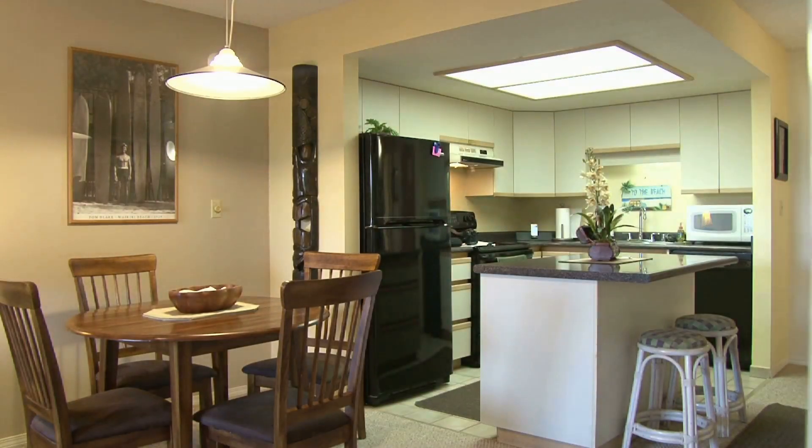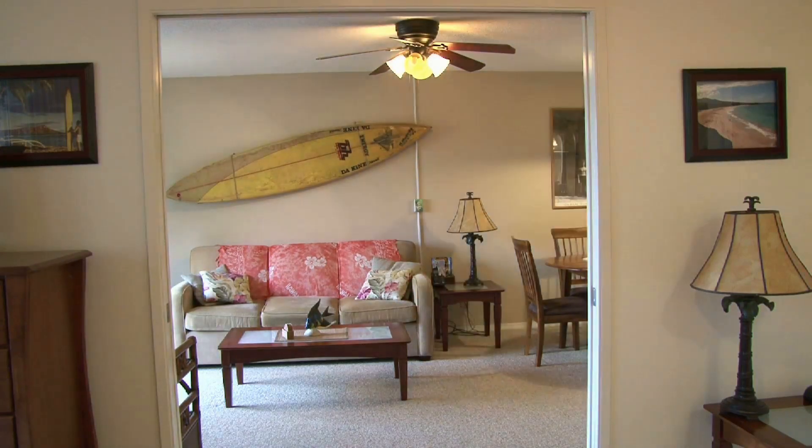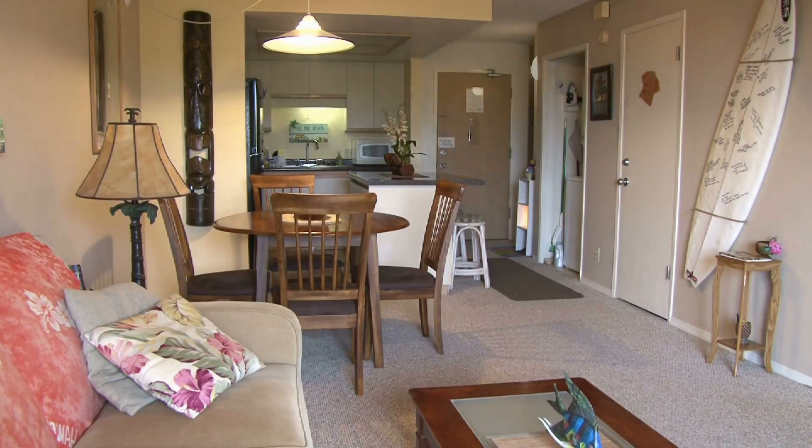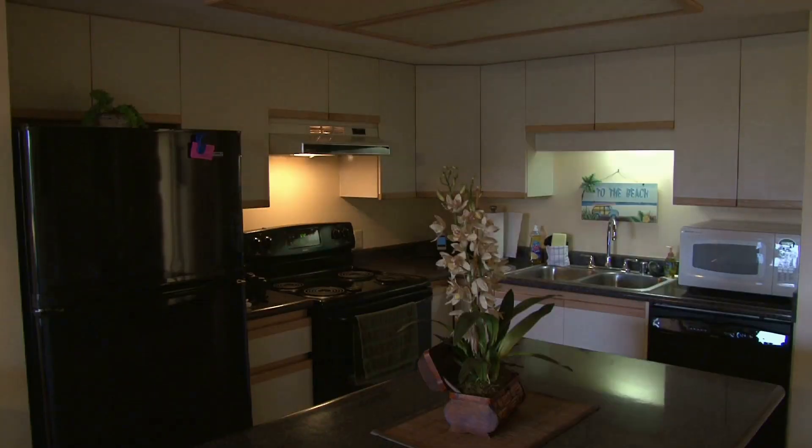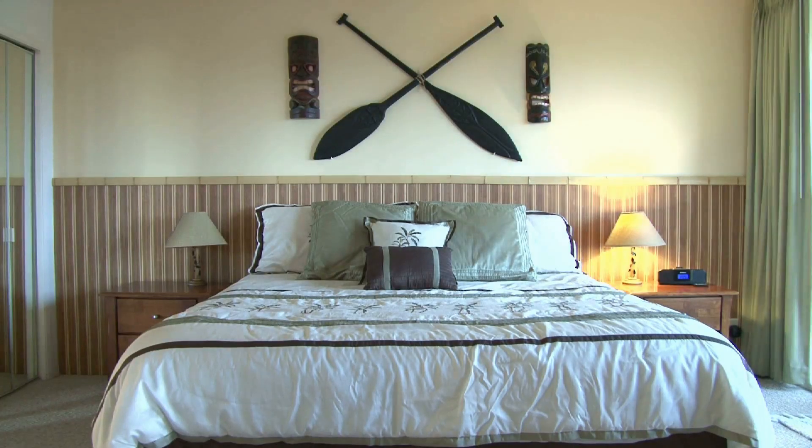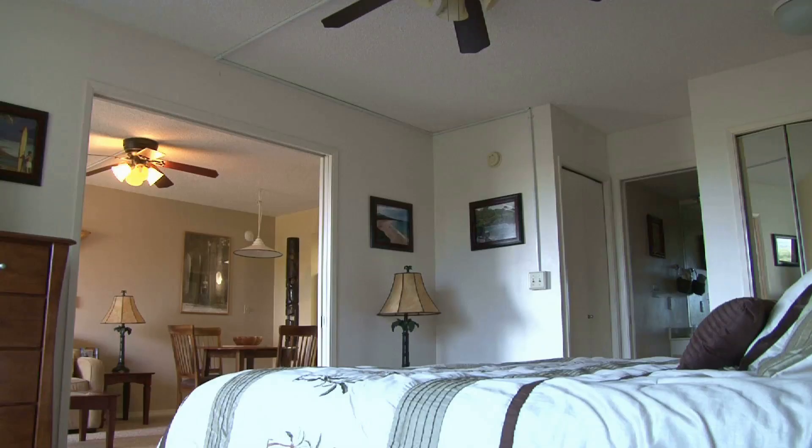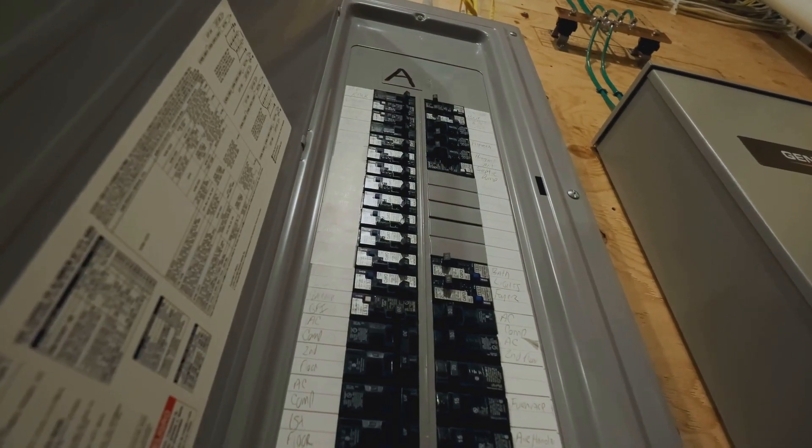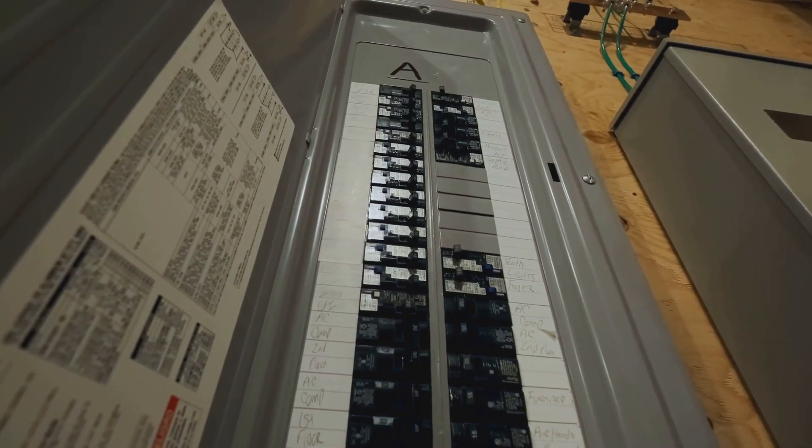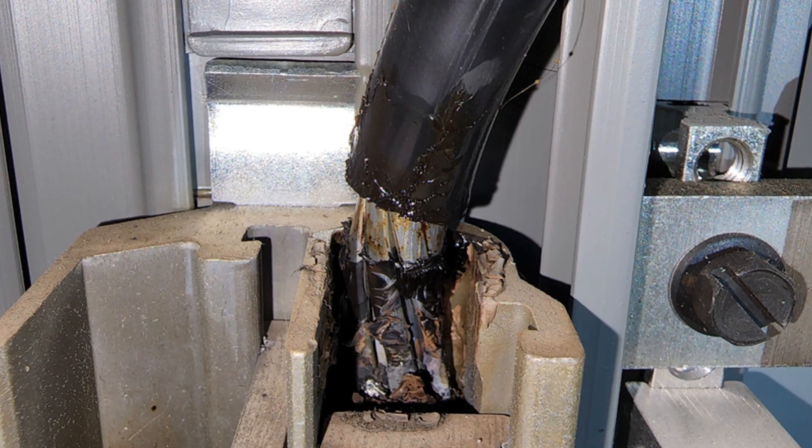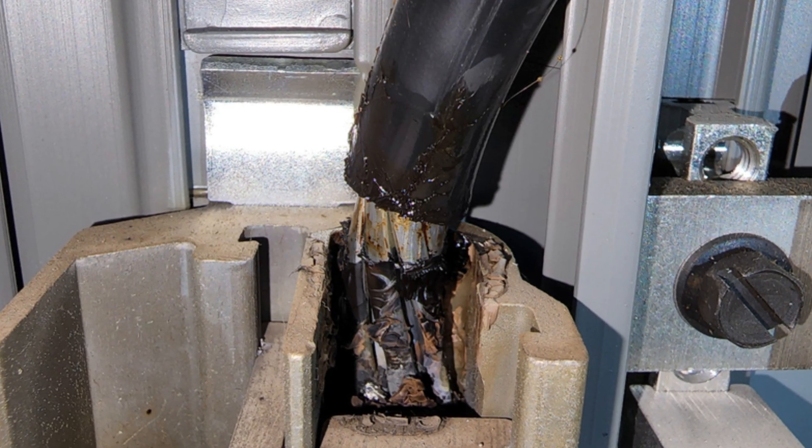If you start adding up the power draw of your other appliances—your fridge, oven, HVAC system, water heater, lights, and all those gadgets—you can quickly see how a 100 amp service might get overloaded. And overloading your electrical system is a recipe for disaster. We're talking tripped breakers, damaged appliances, and even electrical fires.